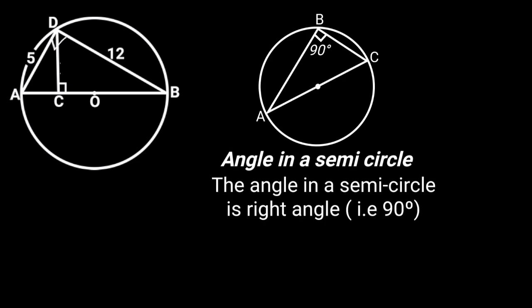To solve this problem, first let's consider triangle ABD. In triangle ABD, angle ADB is 90 degrees. From the circle theorem of angle in a semicircle, which states that the angle in a semicircle is 90 degrees, it follows that triangle ABD is a right triangle.